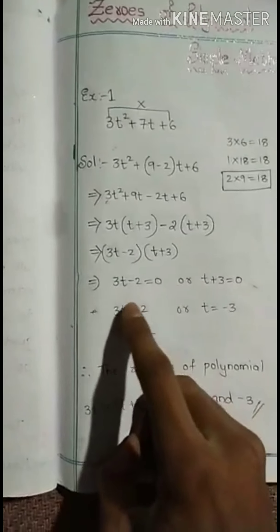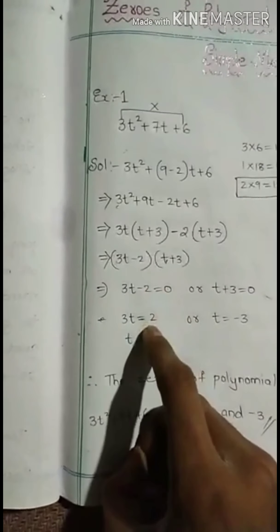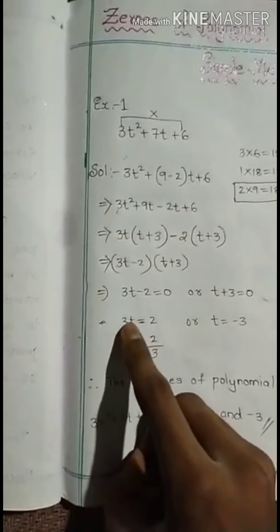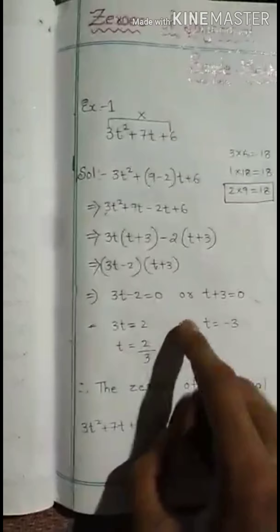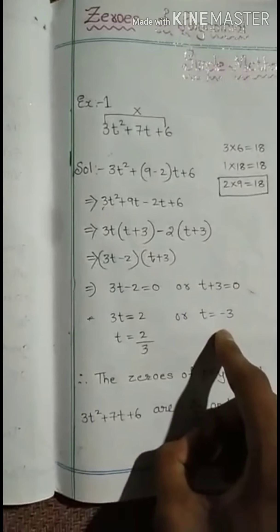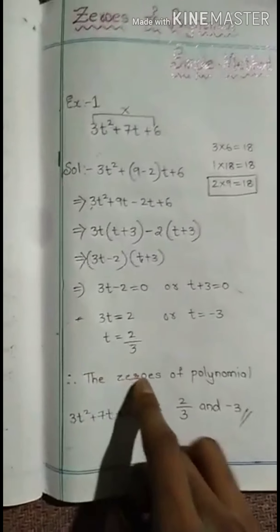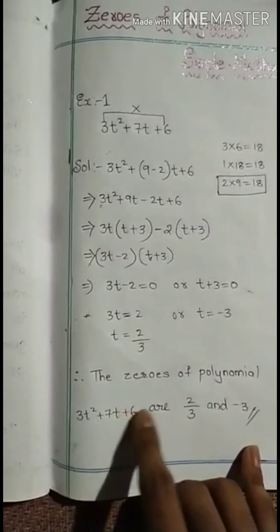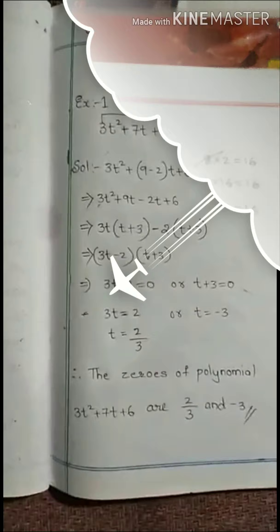From 3t minus 2 equals 0, we get t equals 2 by 3. From t plus 3 equals 0, we get t equals minus 3. So the zeros of the polynomial 3t² plus 7t plus 6 are 2/3 and minus 3.